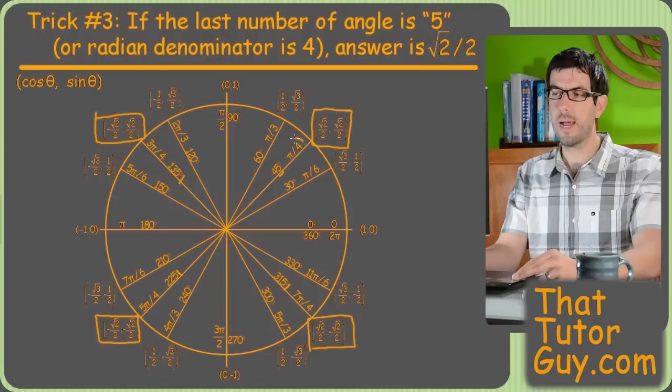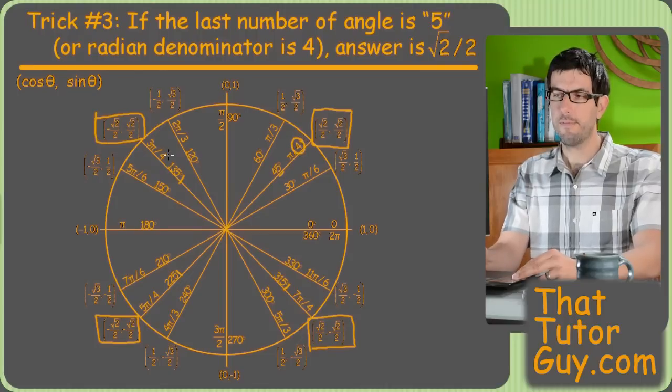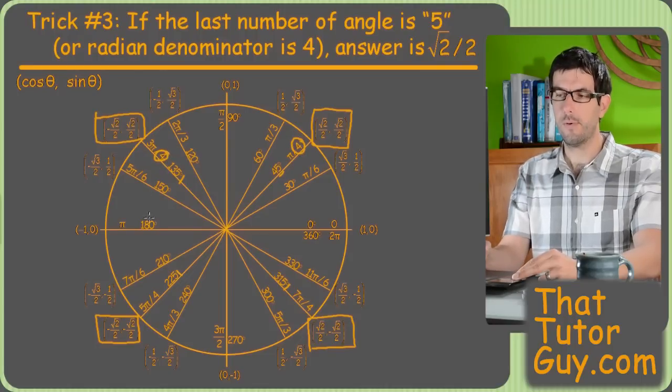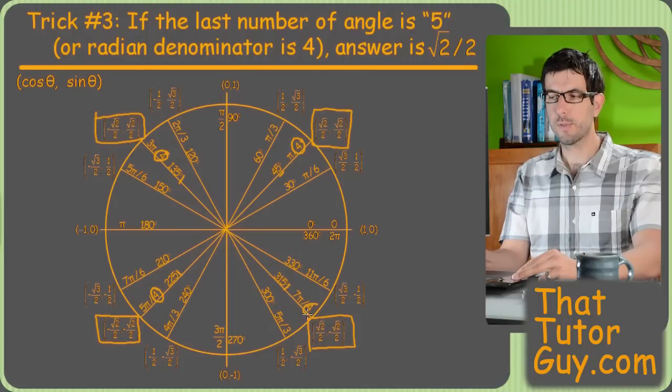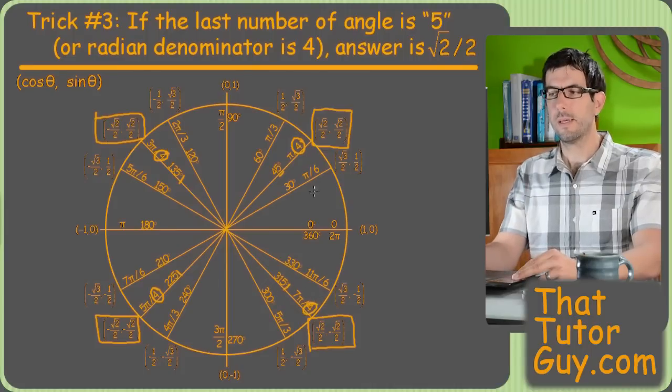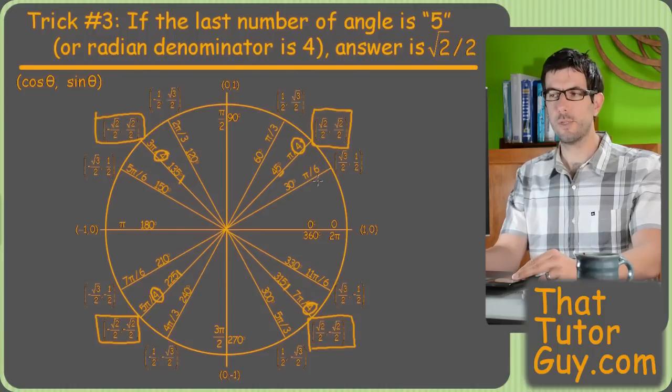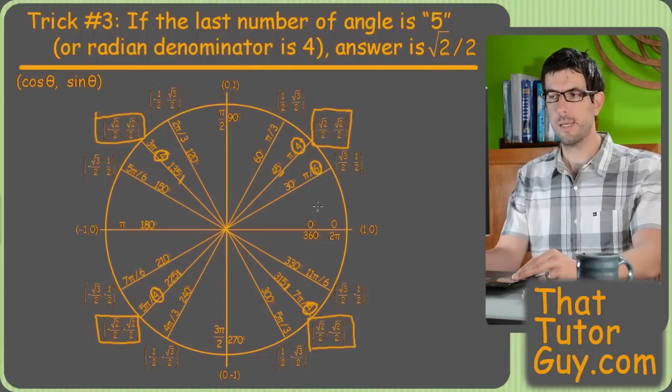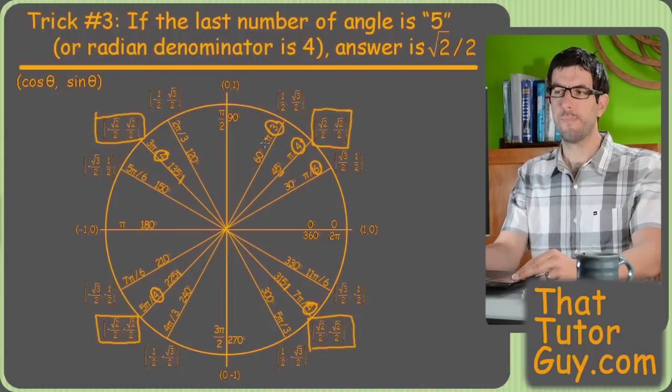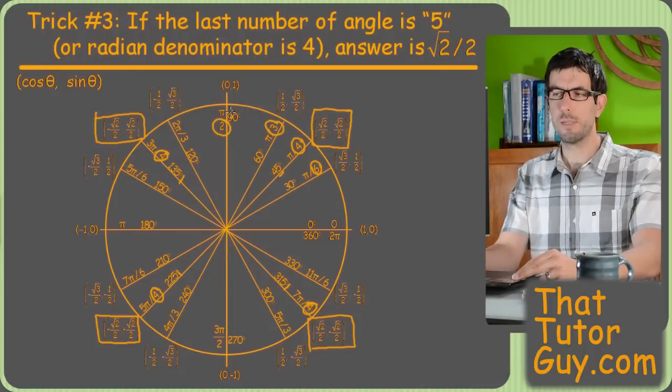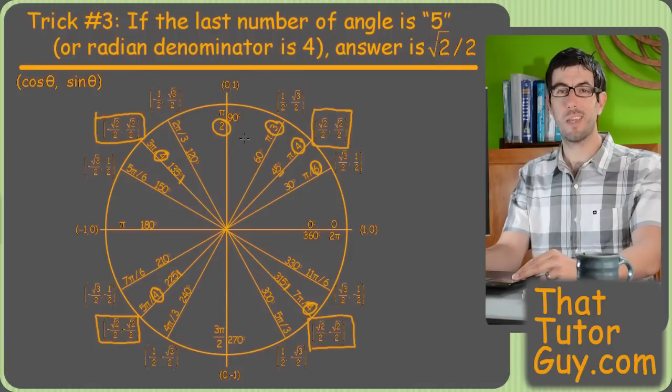And the same can be said of the denominator. If the denominator is four, for any of these things, then that means that you must have a sine and cosine of square root of two over two. Similar thing for radians in general. If six is the denominator, your reference angle is thirty. And if three is your denominator, your reference angle is sixty. Over two, most people seem to already realize, it's going to be a reference angle of ninety degrees, meaning you're either straight up or straight down.